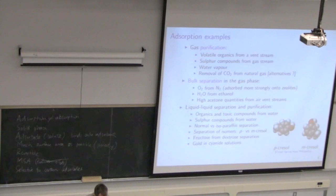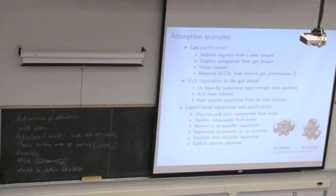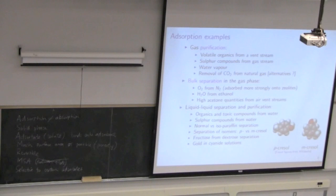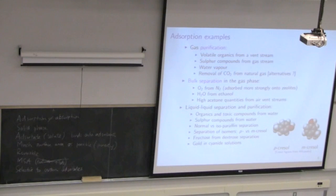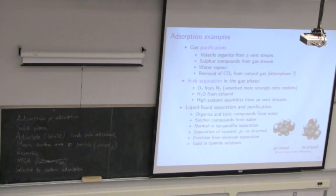Let's look at examples of adsorption for gas phase. One of the most common uses is removing water vapor and sulfur compounds from a gas stream — so dehumidification. We also want to remove H2S, which can poison downstream catalysts. And CO2 removal: in the US section of the International Space Station, adsorbents are used to remove carbon dioxide from the air so CO2 doesn't build up in the atmosphere.